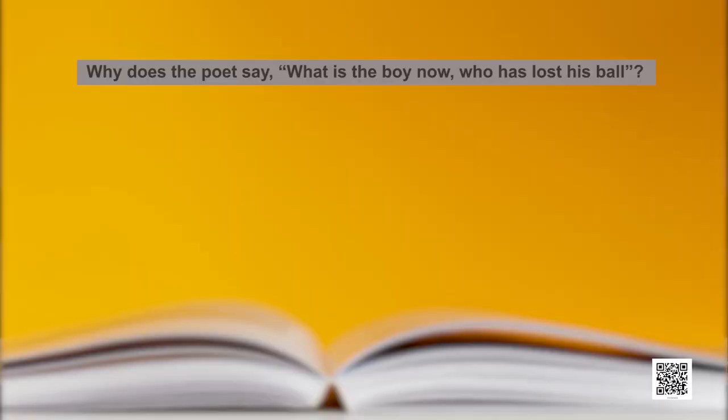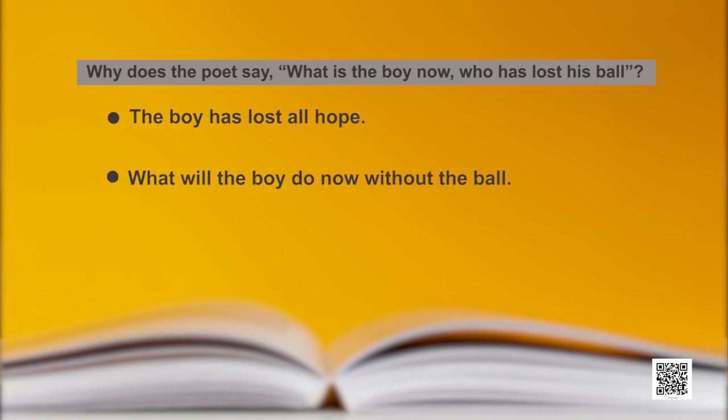Here are some comprehension questions. Question one: Why does the poet say 'What is the boy now, who has lost his ball?' Options: A — the boy has lost all hope; B — what will the boy do now without the ball; C — it is good to lose the ball. Maybe the inclination is towards C, because the poet wants to teach the boy the sense of losing something and then gaining. But reading the lines directly, Option A: the boy has lost all hope — the losing of the ball is a trivial simple thing, but for the child it is more than anything.